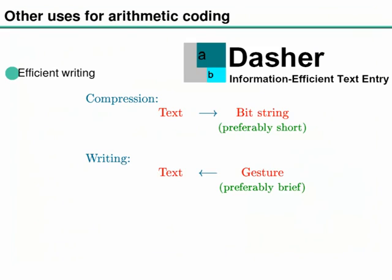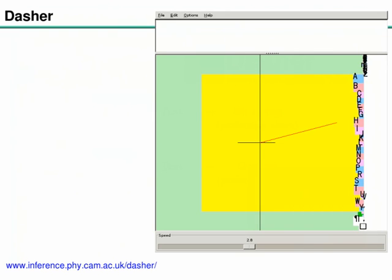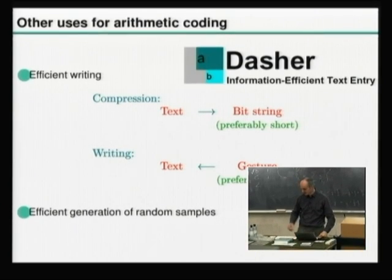There are a couple more things to mention about arithmetic coding. First, we can make an extremely efficient writing system. The one I showed you is called Dasher, based on the idea that writing involves making gestures - wiggling fingers or scribbling - and we want to turn those gestures into text as efficiently as possible. Compression takes text and turns it into a real number, so we can make a very good writing system by having the gesture steer a spaceship in a two-dimensional world. Dasher is free software and help is always welcome.